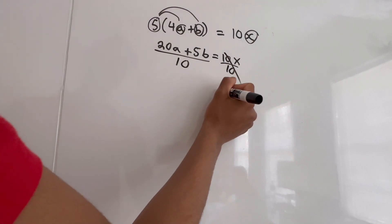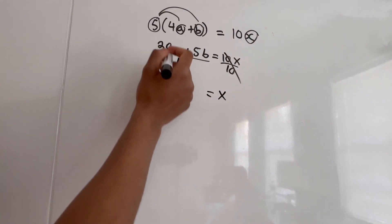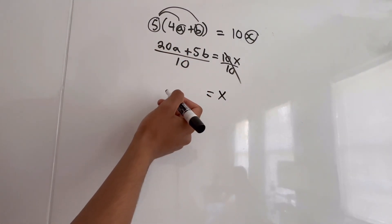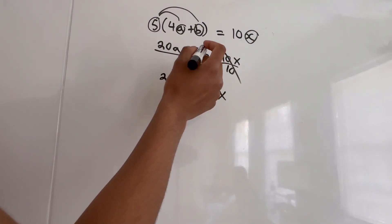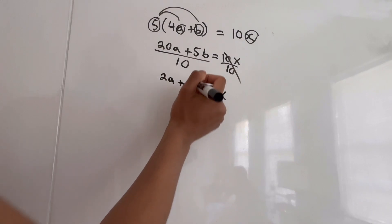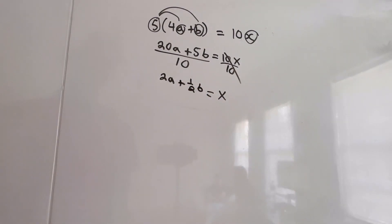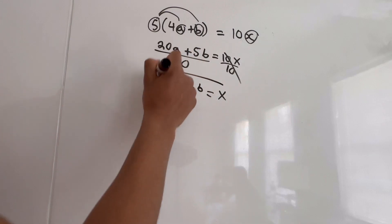These two cancel out, so we're left with X equals, what's 20 divided by 10? That's 2. So 2A plus 5 divided by 10, that's 1 half. So 1 half B. And that's our answer.